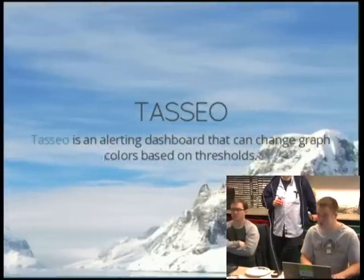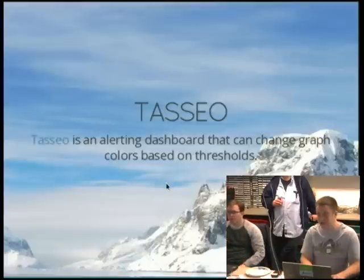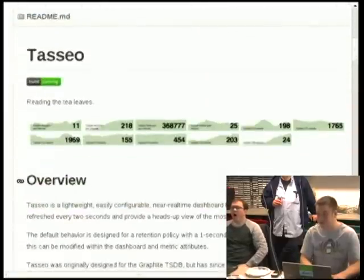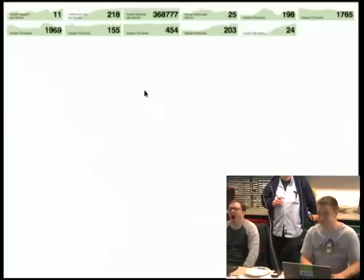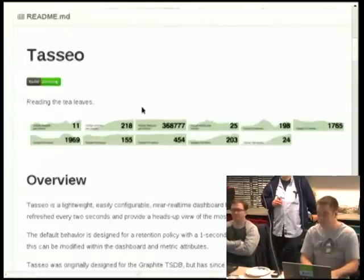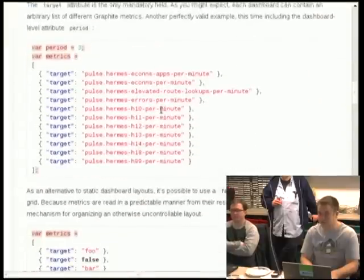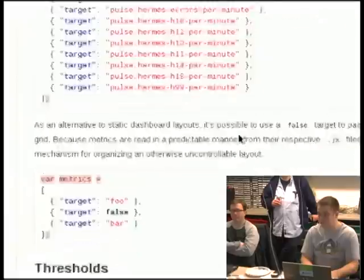TASIO is nice in that it's a real-time alerting dashboard — you can set the graphs to change colors when things break or go over defined thresholds. These are essentially Graphite targets, like pulse.hermes.h10-perminutes.